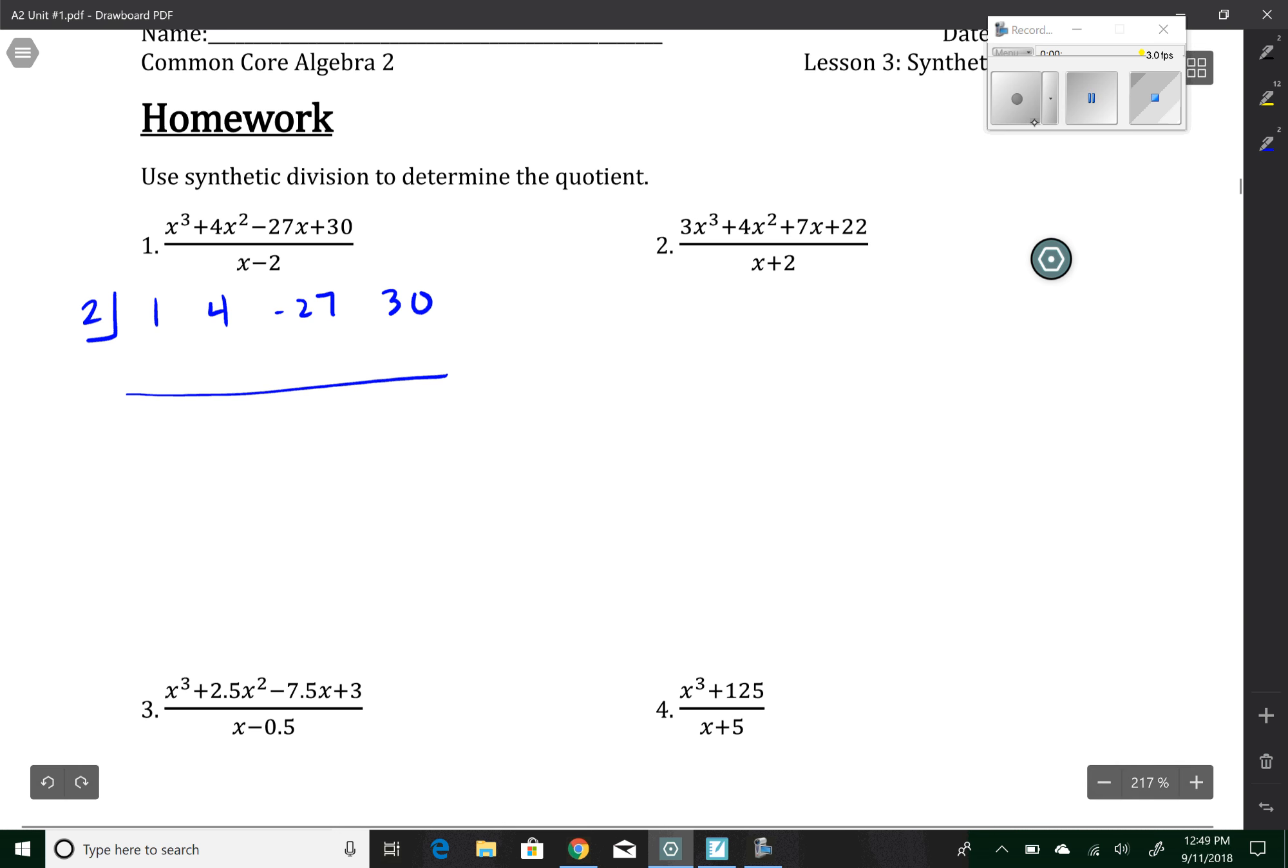First coefficient comes down. To get the next number, we're going to multiply what's in the jail to the one, so that would be two. To get the next number underneath the line, I'm going to add the four and two together, which makes six. Two times six makes 12, and I'm just going to keep repeating the process until I get to the last line.